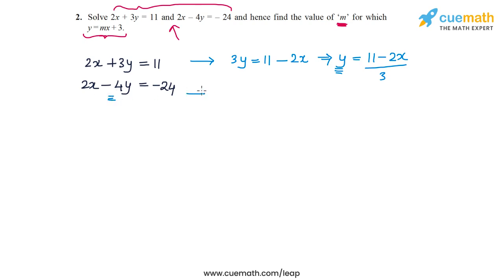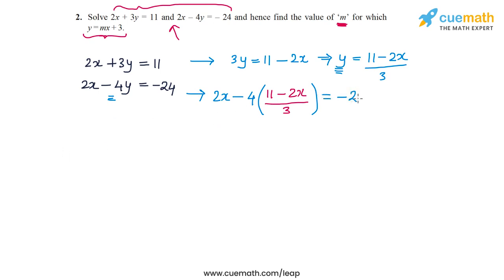Now I will substitute this value of y into the second equation. What I get is 2x minus 4 times (11 minus 2x) divided by 3, and this is equal to minus 24. This equation is now in x alone, so let's solve it to find the value of x.